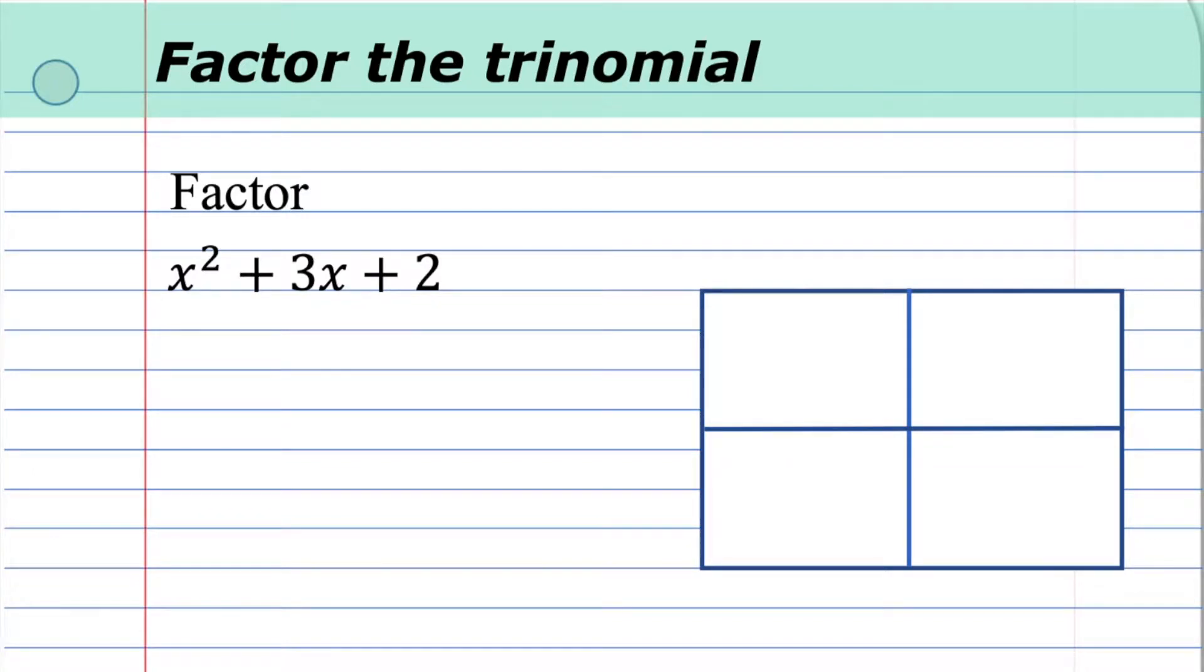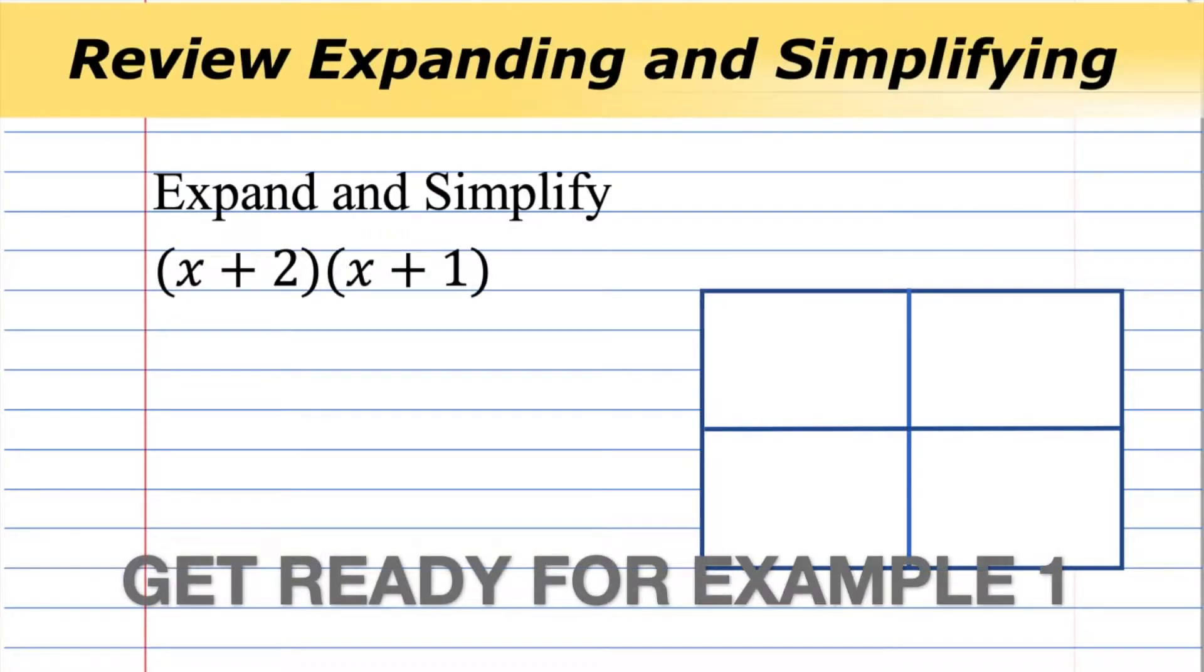By the end of the video, you're going to be able to change the look of an expression that has three terms with descending powers: x squared, x to the 1, and a constant. Before we do that, let's review expanding and simplifying.